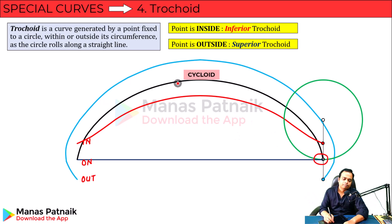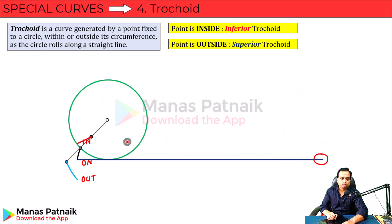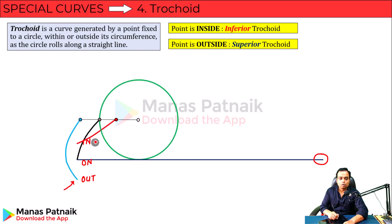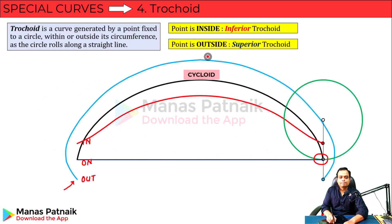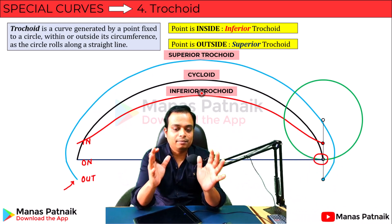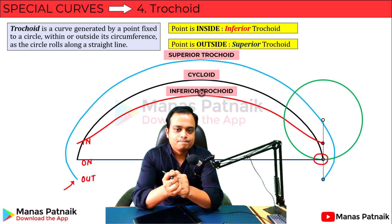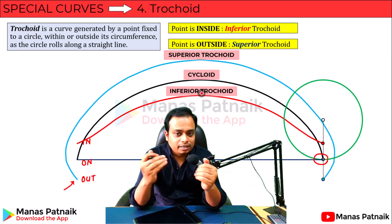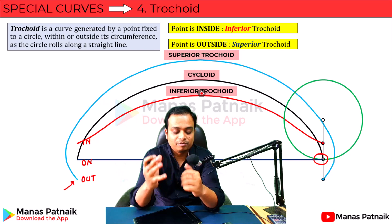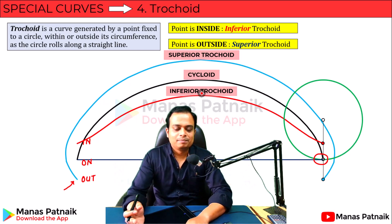The black point — the curve generated by a point on the circumference — is popularly known as a cycloid. The curve generated by the blue point, which was outside the circumference, is popularly known as a superior trochoid. And the one generated by the point inside the circumference is known as an inferior trochoid. I sincerely hope this animation has helped you understand cycloids and trochoids and their comparison through one single rolling or generating circle.